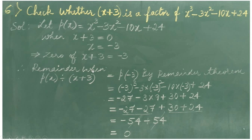Therefore, the remainder when p of x is divided by x plus 3 would be equal to p of minus 3, by remainder theorem. Substituting minus 3 in p of x: p of minus 3 equals minus 3 cube minus 3 into minus 3 square minus 10 into minus 3 plus 24.